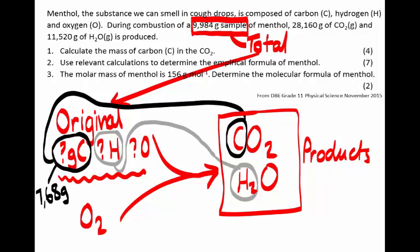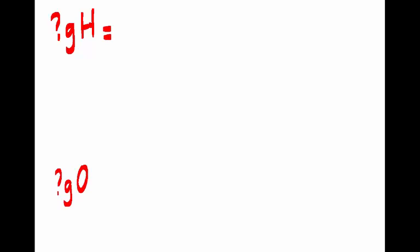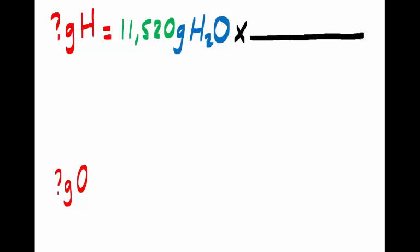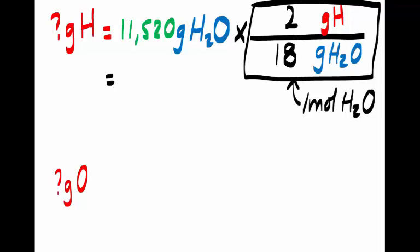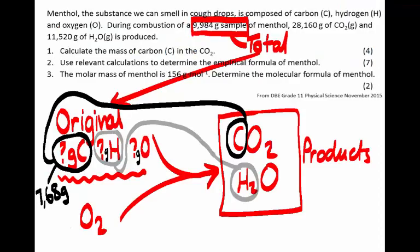Now we need to know how many grams of hydrogen and oxygen the compound contained. All the hydrogen ended up in the water that was produced — 11.520 grams of water. We multiply by a conversion factor with grams of water at the bottom and grams of hydrogen at the top, knowing that both refer to one mole of water molecules. One mole of water has a mass of 18 grams, and just the hydrogen atoms within it have a mass of 2 grams. Doing the calculation, we find 1.28 grams of hydrogen atoms.